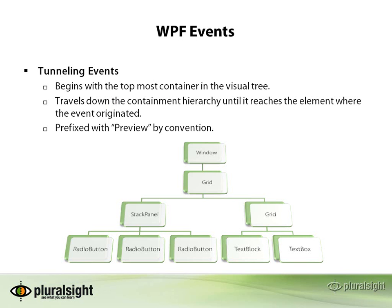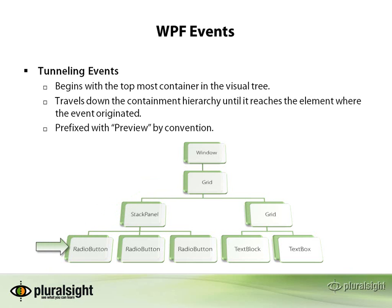Tunneling events begin with the topmost container in the visual tree, then travel down the containment hierarchy until reaching the element where the event originated. For example, preview mouse down allows you to intercept a mouse down event first at the window level, and then in increasingly more specific containers until you reach the originating element. By convention, tunneling events are prefixed with 'preview', which helps identify tunneling events from bubbling events.